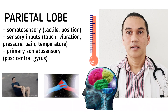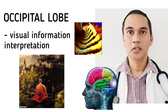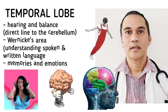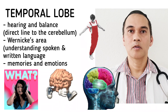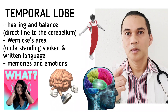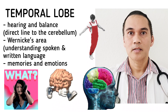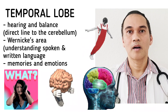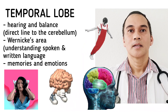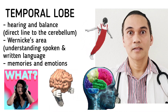The occipital lobe is primarily for visual processing — so vision is your occipital lobe. The temporal lobe is responsible for hearing and balance, and it has a direct connection from the temporal lobe to the cerebellum. Also, because some parts of the limbic system are located in the temporal lobe — like the amygdala — the temporal lobe is also responsible for emotions and memory.